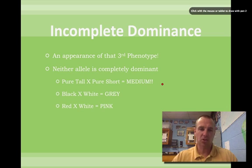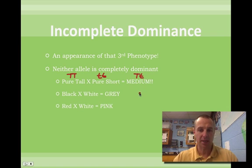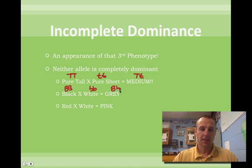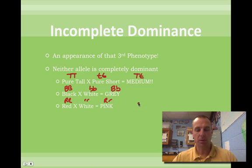Let's look at the genotype. Pure tall would be TT, pure short would be tt, so the medium is the heterozygous individual (Tt). Pure black would be BB, pure white would be bb, and the heterozygous individual (Bb) would be gray. RR would be red, rr would be white, and Rr would be pink. That's the first type of inheritance pattern, and the Punnett squares are worked out the same way.